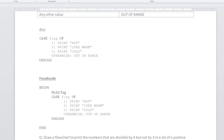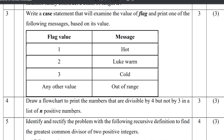The first question in Module 2 Part A, worth 3 marks: draw a flowchart to print the numbers that are divisible by 4 but not by 3 in a list of n positive numbers.